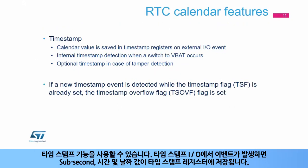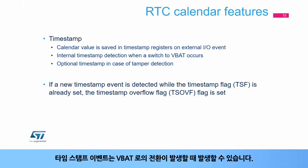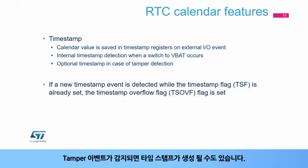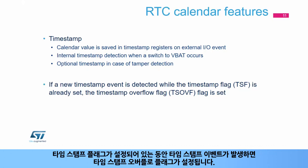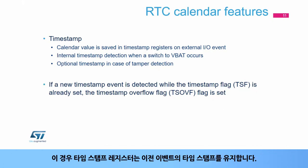A timestamp function is available. The sub-second, time and date values are saved in timestamp registers when an event occurs on the timestamp I/O. A timestamp event can occur when a switch to VBAT occurs, or when a tamper event is detected. If a timestamp event occurs while the timestamp flag is set, the timestamp overflow flag is set, and the timestamp registers maintain the timestamp of the previous event.